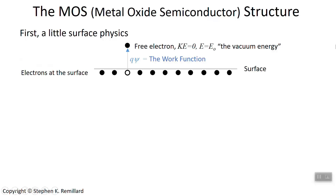Up until now, we've only looked at structures with two sections: a p-type and an n-type semiconductor, or a metal and a semiconductor. Now we're going to add a third type. We'll have a metal-oxide-semiconductor (MOS) structure — a good conductor, an insulator, and a semiconductor, forming a three-level structure.